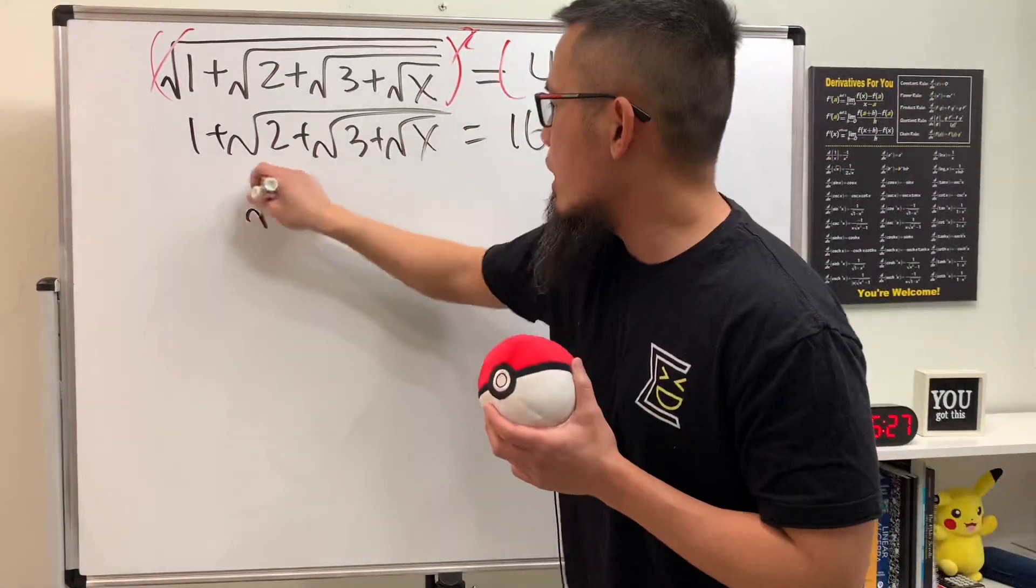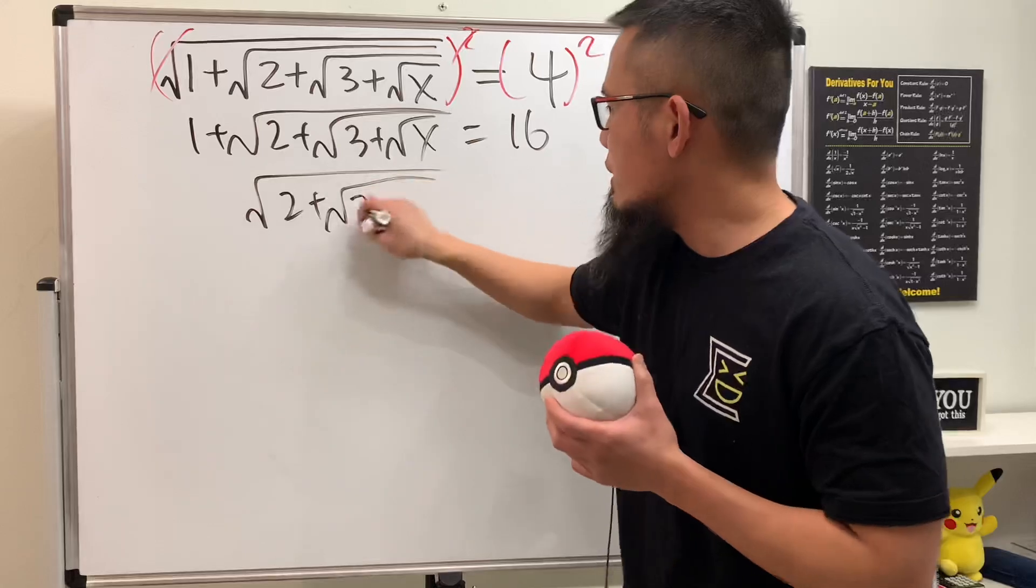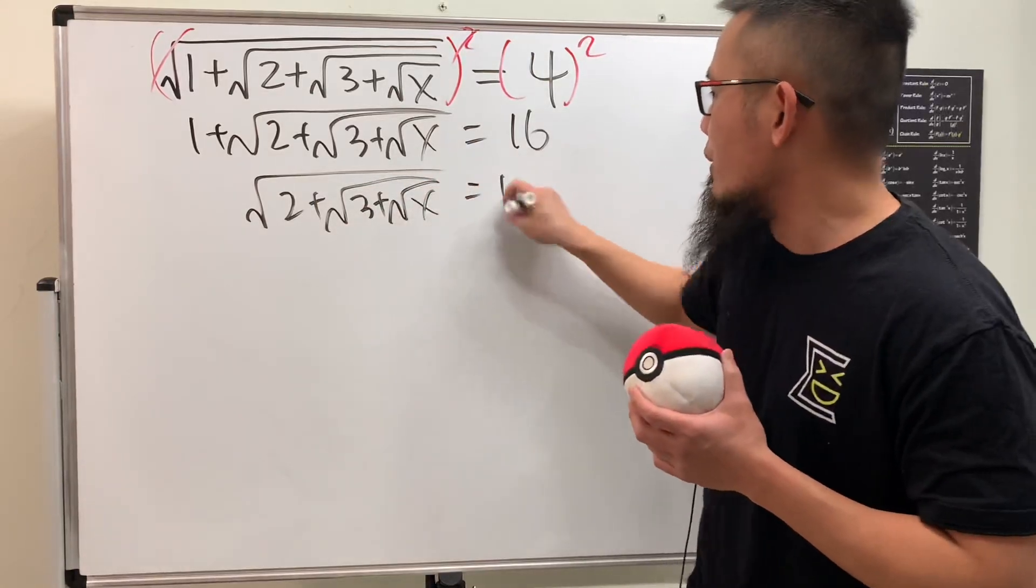Minus 1 from both sides, so we get square root of 2 plus the square root of 3 plus the square root of x equals 15. And now,